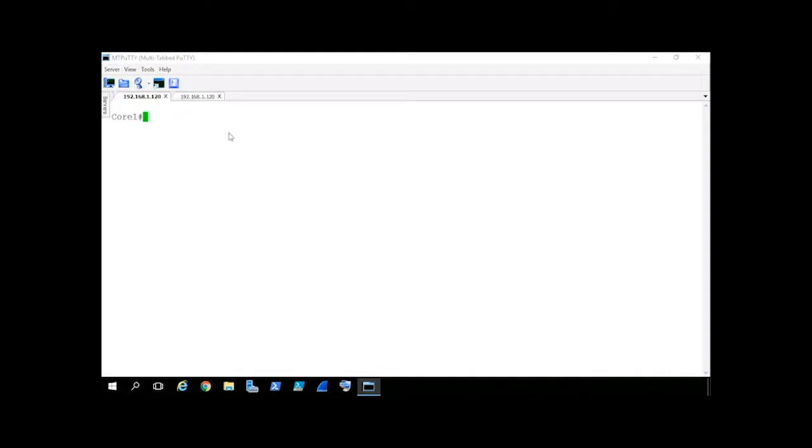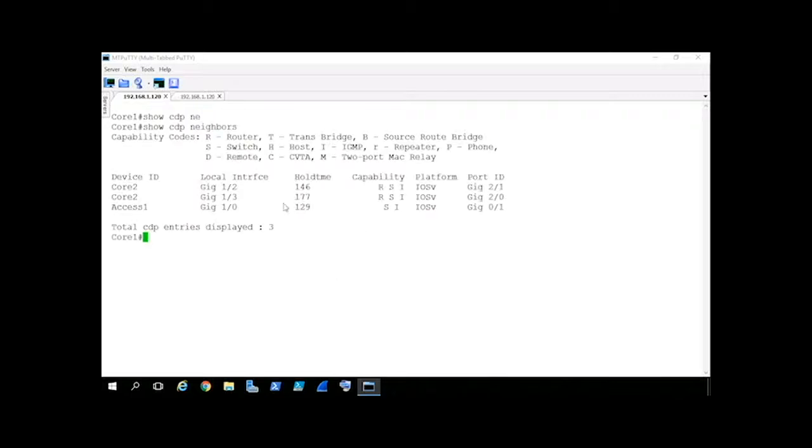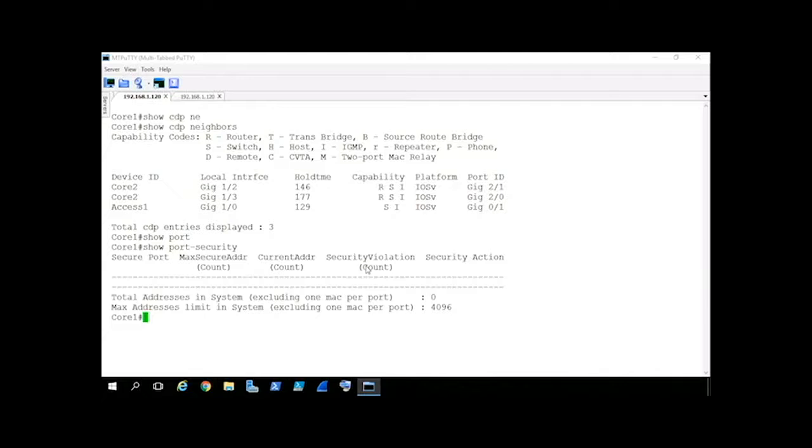So let's start on core 1, and let's just verify our connections with the show CDP neighbor. So from core 1's perspective, our local interface gig 1/0 does indeed go up to access 1. So that's correct. And let's also do a show port-security, just to make sure that before we start configuring, it's not already in place somewhere. So we'll do a show port-security, not enabled anywhere. Great.